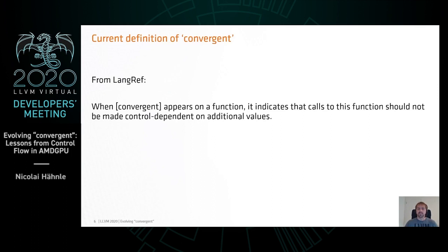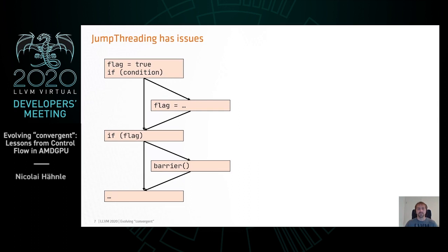What we have today in the LangRef says that a transform is correct if it does not add new control dependencies on the convergent attribute — that's literally how the convergent attribute is defined. It allows us to distinguish between the two cases on the previous slides, but it has a whole bunch of issues. We've had to do some workarounds in our front ends, and one particular issue that's interesting is what I want to show you here.